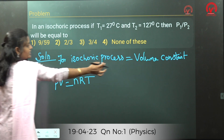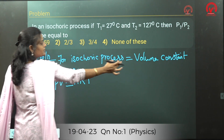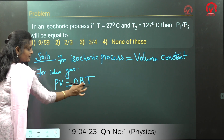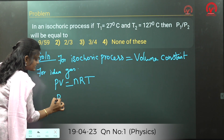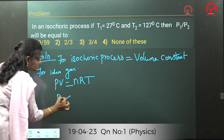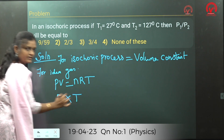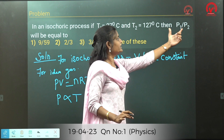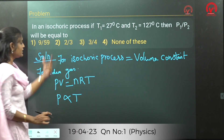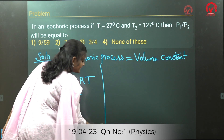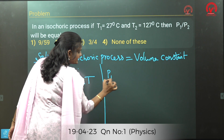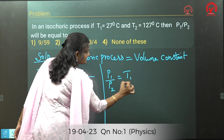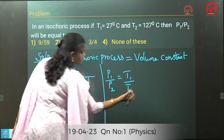For an isochoric process, volume is kept constant, so volume is a constant value. Therefore, P is directly proportional to T. They ask for P1 divided by P2, which can be written as P1/P2 = T1/T2.